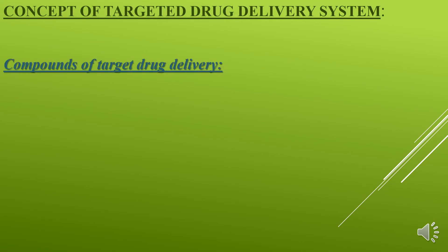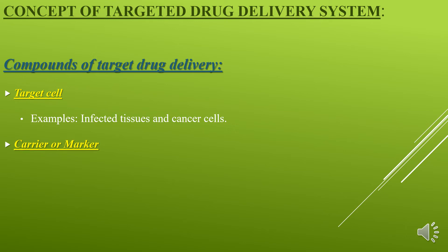Components of targeted drug delivery. First: target cell — the targeted cell is a group of cells in the minority, identified to be in need of treatment. Examples include infected tissues and cancer cells. Second: carrier or marker — targeted drug delivery can be achieved by using a carrier system. A carrier is a special molecule or system essentially required for effective transportation of the loaded drug up to the pre-selected site.